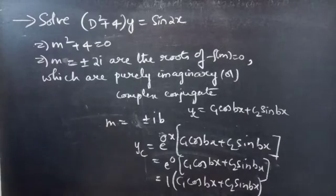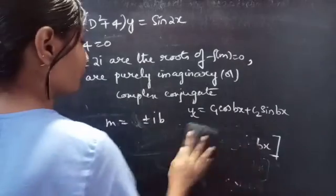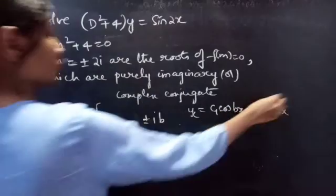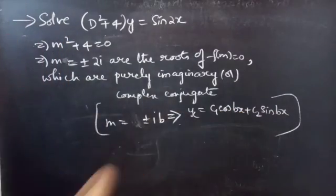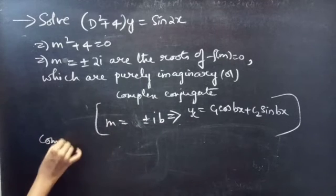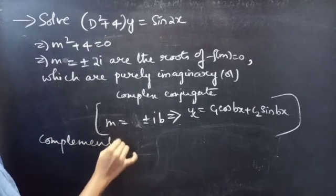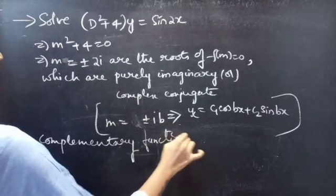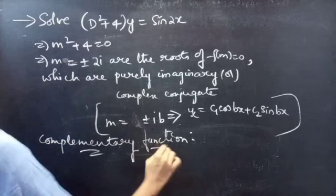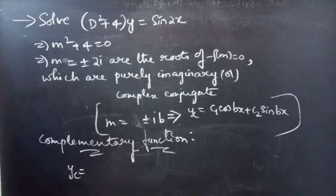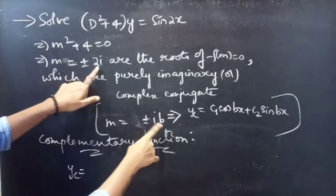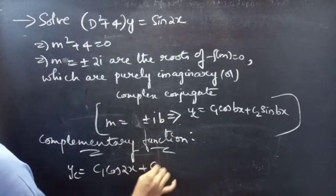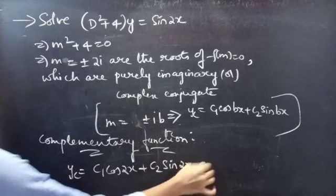Now let's write the complementary function for our problem using this formula. For b = 2, yc = c₁ cos 2x + c₂ sin 2x.